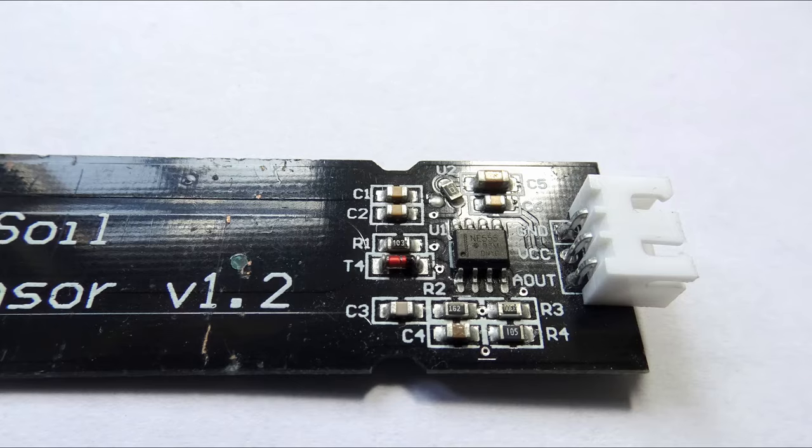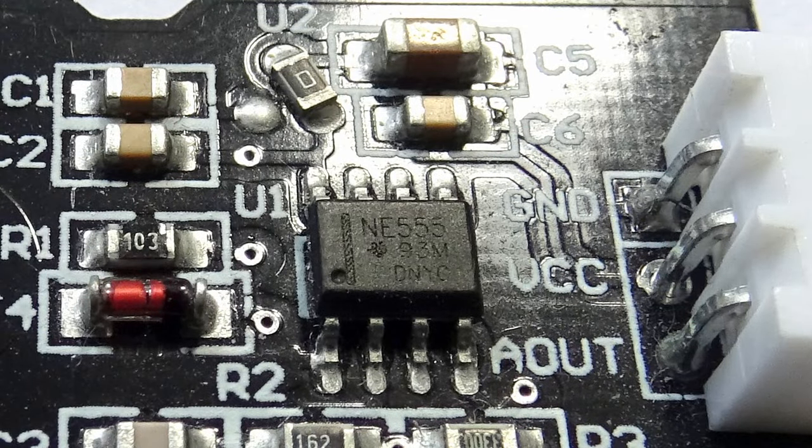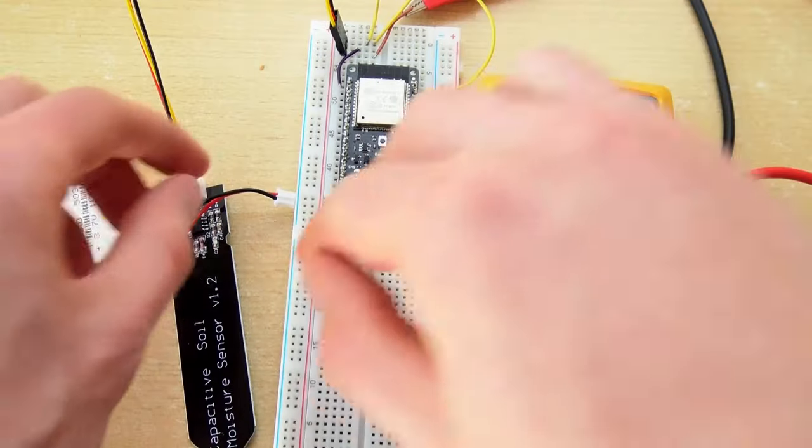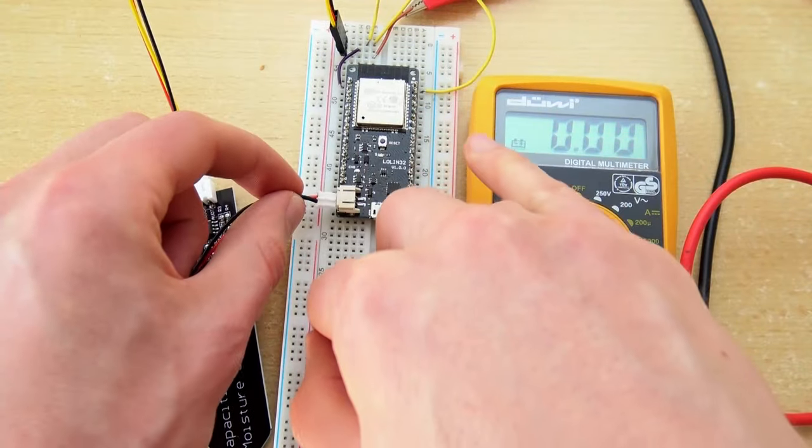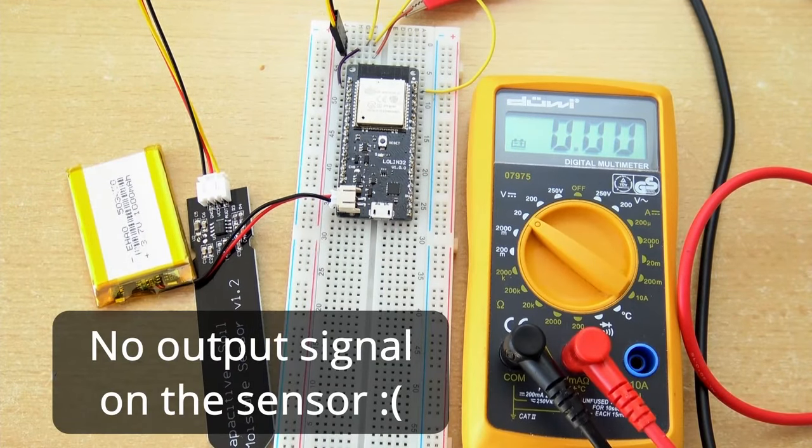However, some manufacturers use older NE555 chips instead to save costs. The datasheet for this chip reveals that it has a minimum supply voltage of 4.5V. So these sensors will not work if powered, for example, by a 3.7V lithium-ion battery or directly from a 3.3V ESP32.